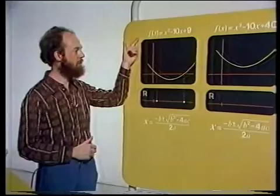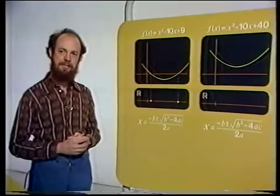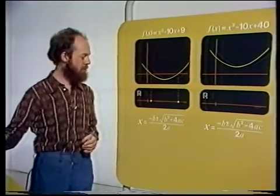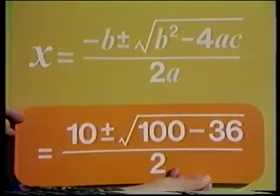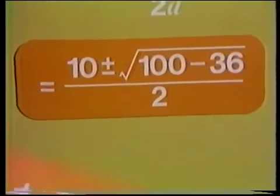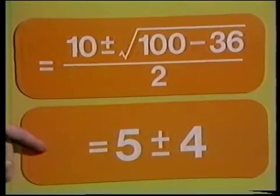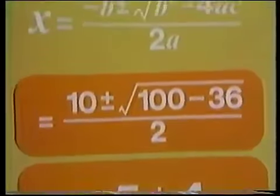We have an algebraic method for solving quadratic equations — the method we asked you to look at before the program. It uses the coefficients of the equation and substitutes them into a certain formula. I'm going to use that method to solve both cases that Alan looked at. Substituting in the coefficients of the first equation, that simplifies down, and I have the two roots: x is 5 plus or minus 4, giving x equals 9 and x equals 1.